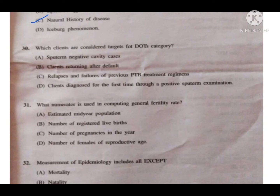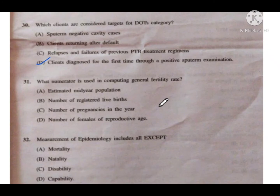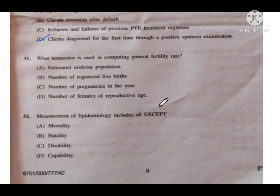Question number 30 on TB DOTS categories: Option A is sputum-negative cavity cases, B is client returning after default, C is relapse and failure of previous pulmonary tuberculosis treatment regimen, and D is client diagnosed for the first time through a positive sputum examination. Option D is the correct answer — a patient with a first-time positive sputum examination falls under DOTS category 1.